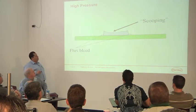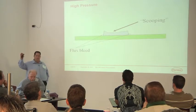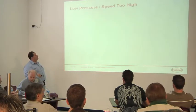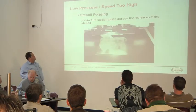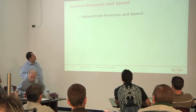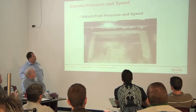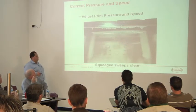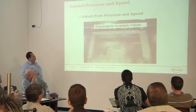Sometimes too high a pressure, you can get scooping or flux bleed. Because basically the blade's coming in so hard, it actually deforms into that aperture and scoops it out. So, we talked about low pressures, fogging. You'll see here. But up that pressure and speed, and you'll get a nice clean sweep. And then that gets you what you want. There's the squeegee sweeping clean. Through the magic of PowerPoint animation.